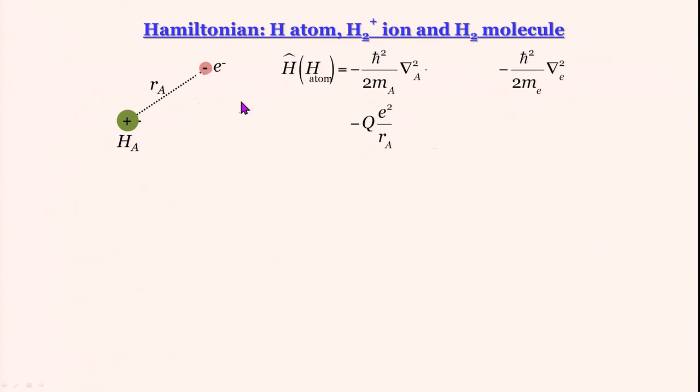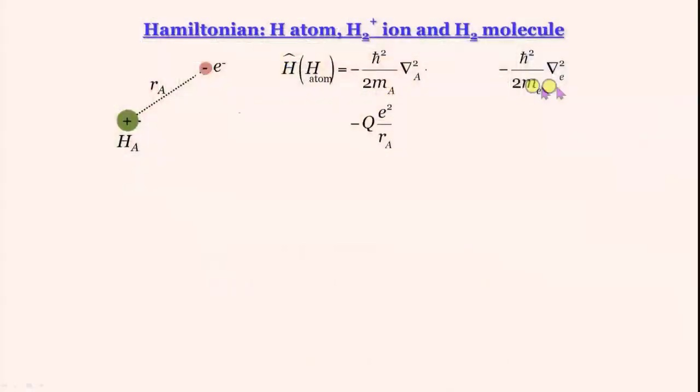If you remember what we have studied earlier, the Schrodinger equation is actually separated into two parts. One associated with the motion of center of mass and the other associated with a motion of the reduced mass with respect to the center of mass. But the reduced mass is for all practical purposes the electron. The center of mass is for all practical purposes the nucleus.